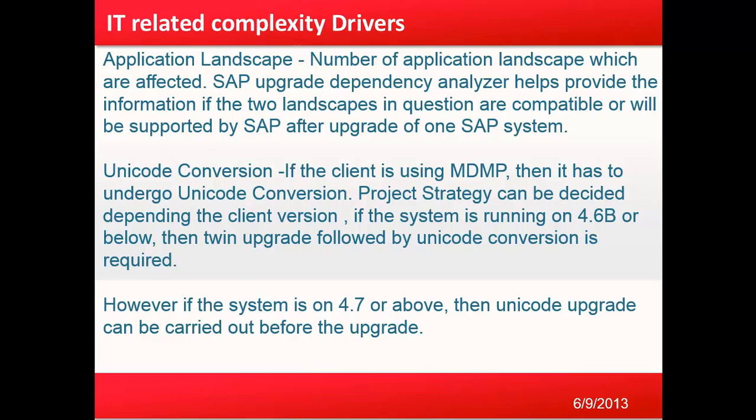For example, if I am performing an upgrade of an ECC system, whether my BW system or my portal will be impacted. Unicode conversion is another factor — if the client is using MDMP, it has to undergo unicode conversion. The project strategy depends on the client version: if the system is running on 4.6C or below, a twin upgrade followed by unicode conversion is required; if on 4.7 or above, a unicode upgrade can be carried out before the upgrade.